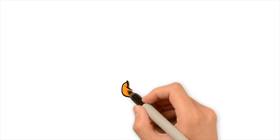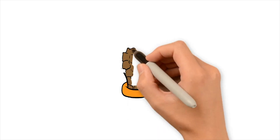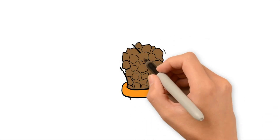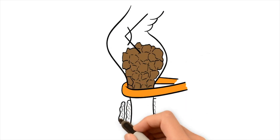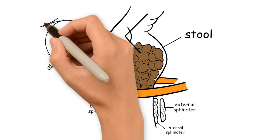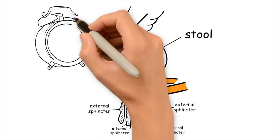The rectum acts as a storage area for stool until it can be passed out of the anus or back passage. It is rich in blood and nerves and can expand to store a variable amount of stool, which varies from person to person. Once this amount of stool enters the rectum, we get the sensation of needing to go to the toilet.